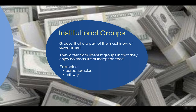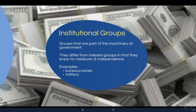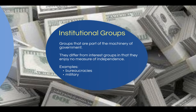Institutional groups are a bit different. They are groups created by some sort of government order, and these groups are part of the machinery of government. They differ from interest groups in that they enjoy no measure of independence. Some examples of institutional groups are bureaucracies and the military. The military has certain desires as a group that it relies on the government to handle — things like more funding or more control over their own affairs as opposed to control in the hands of elected officials. We can think of these institutional groups as having an interest in something that is mandated by their order.